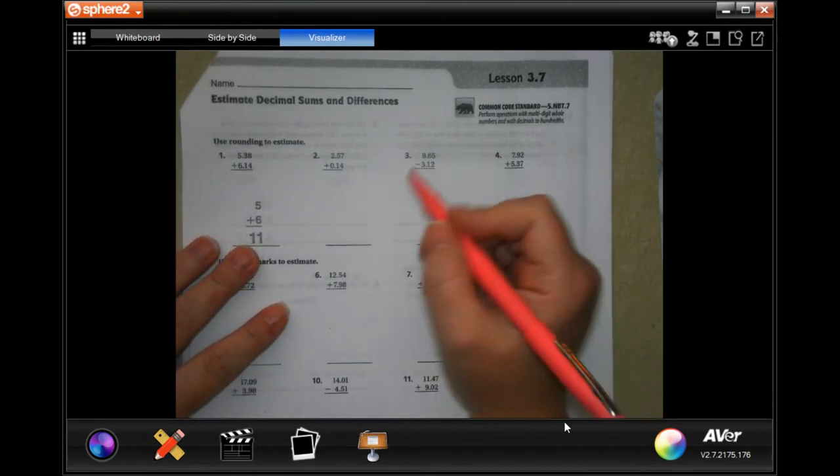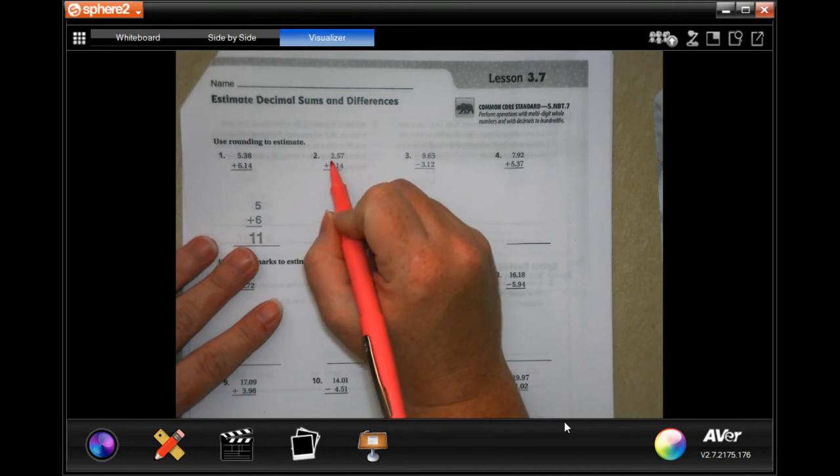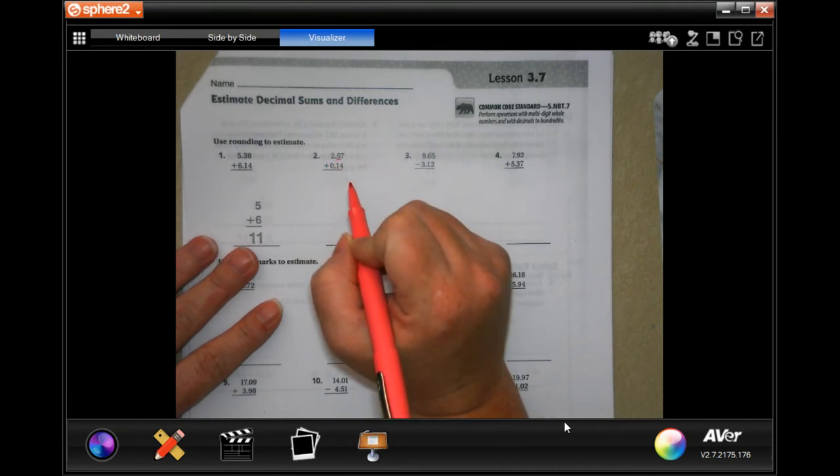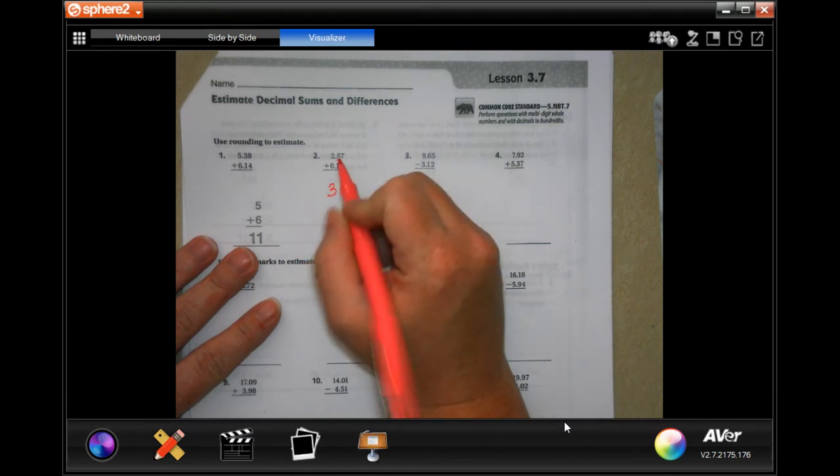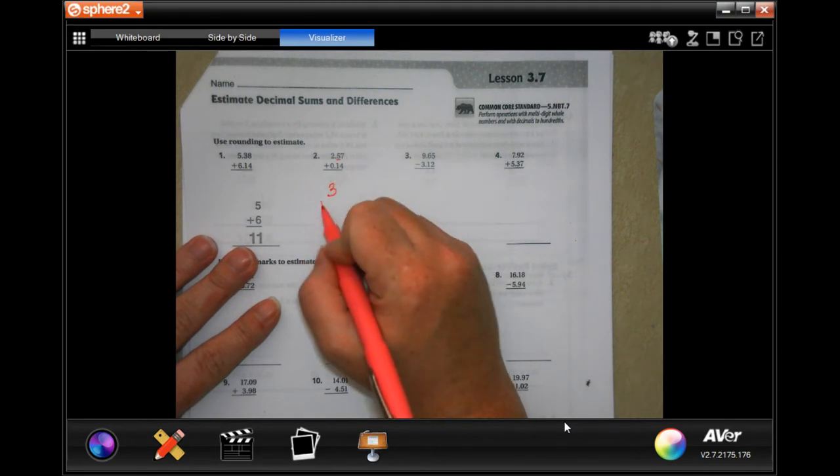So we're going to go ahead and get started with number 2. So 2.57 for the whole number would round to 3. That 5 is 5 or bigger, so it's going to round to a 3. 0.14, well, 1 doesn't make that go up, so it's going to be plus 0.